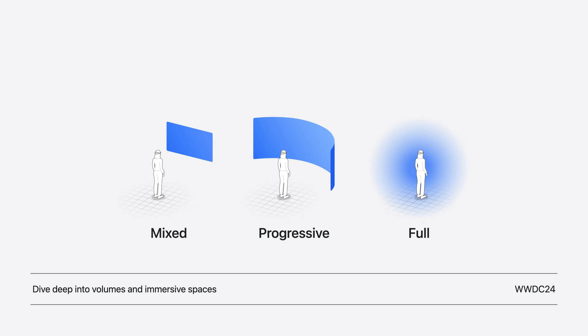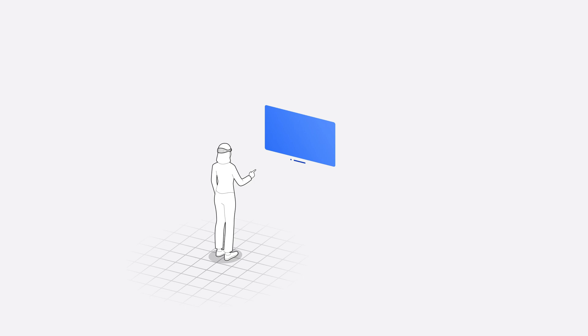To learn more about customizing your immersive space, check out the session Dive Deep into Volumes and Immersive Spaces. The recommended way to build an incredible media viewing experience for Vision OS is to take advantage of the features in AVKit and in particular AVPlayerViewController, which integrates with the system for enhanced video playback capabilities. Using AVPlayerViewController supports HLS streaming and makes it simple to provide the familiar playback experience that matches system apps like TV and Music.